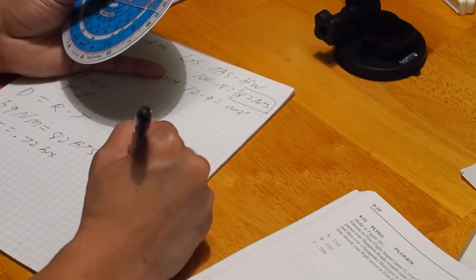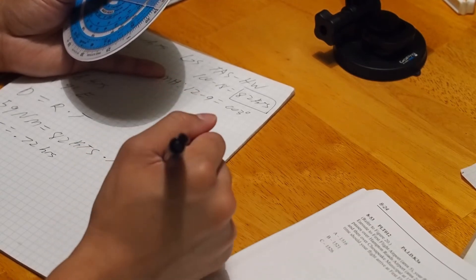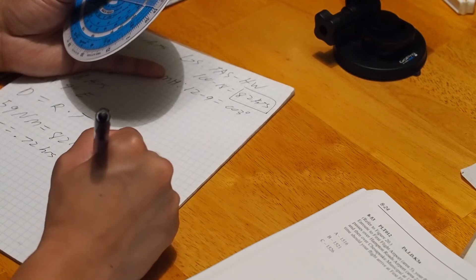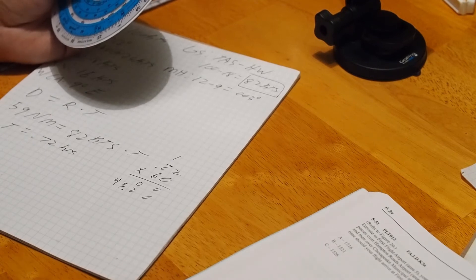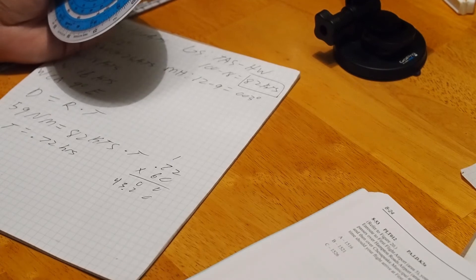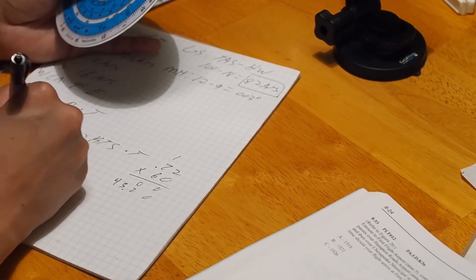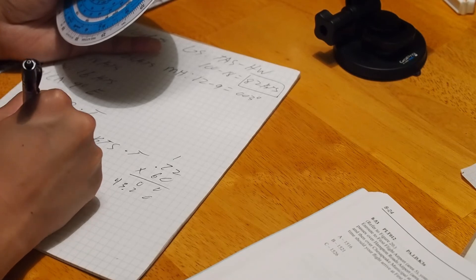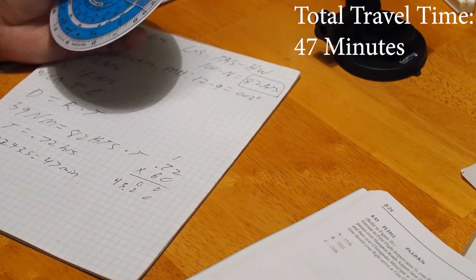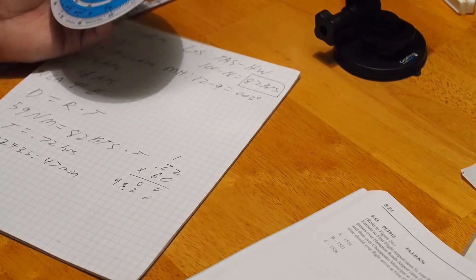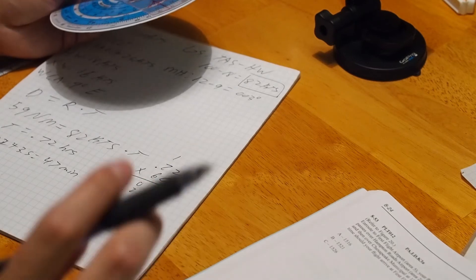Time equals 0.72 hours. 0.72 times 60 equals 43.2 minutes. Now, we have answer A on this question is 44 minutes. So you say, oh, 44. But don't forget, you have to add the climb out. So 43.2 plus 3.5 equals 47 minutes, which is about 48. It's not going to be perfect because, you know, human error. You get 47 minutes, which is about 48, and the answer is indeed B. That's how you use the majority of tools on your flight computer.